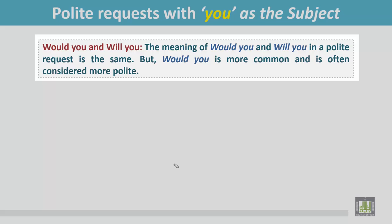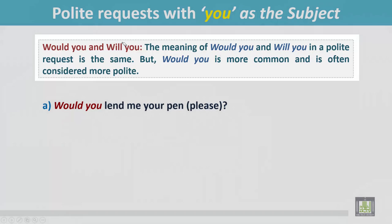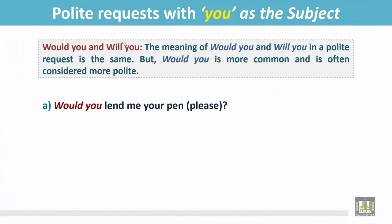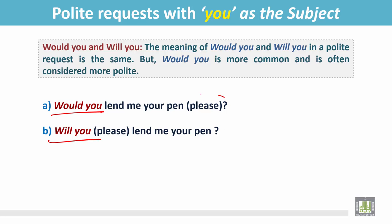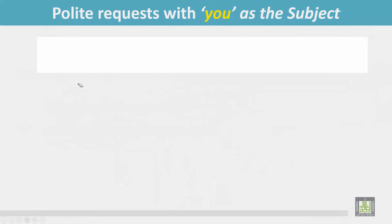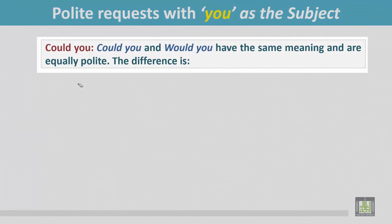Polite requests with 'you' as the subject: Would you and Will you. The meaning of Would you and Will you in a polite request is the same, but Would you is more common and is often considered more polite. Examples: Would you lend me your pen? Will you lend me your pen? In both cases, the speaker is requesting very politely.